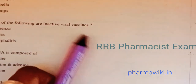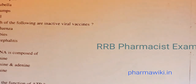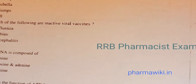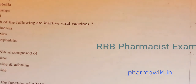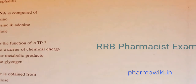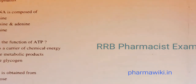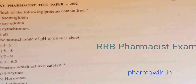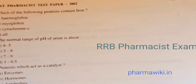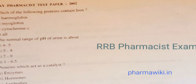Question 91: DNA is composed of guanine, cytosine, adenine, and thymine. Question 92: The function of ATP is to act as a carrier of chemical energy. Question 93: Glucose can be obtained from cellulose, starch, and sucrose. Question 94: Which proteins contain iron? Hemoglobin, myoglobin, and cytochrome all contain iron — answer is D, all of the above. Question 95: The normal range of pH of urine is about 5 to 8. Question 96: Proteins which act as catalysts are called enzymes.